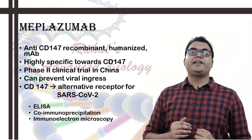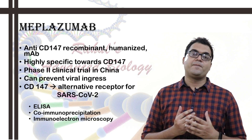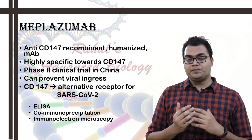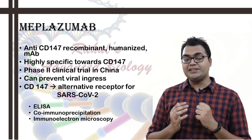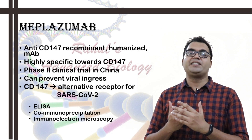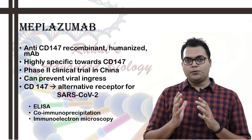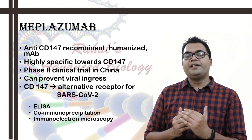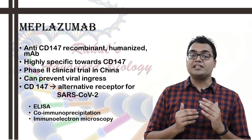A specific recombinant humanized monoclonal antibody known as meplazumab has been developed as an anti-CD147 agent. It is currently being used in China in a phase 2 clinical trial, being tested against COVID-19. Scientists are hoping that this drug will reduce viral infectivity and tropism by deteriorating viral ingress via the CD147 secondary receptor used by SARS-CoV-2.